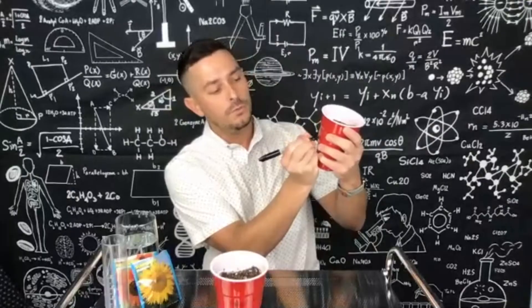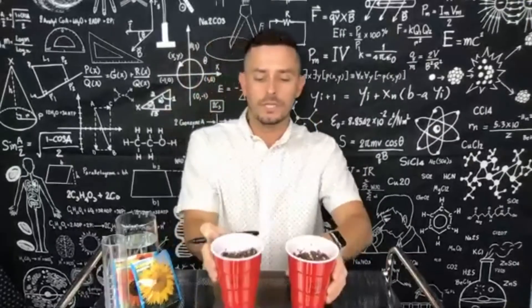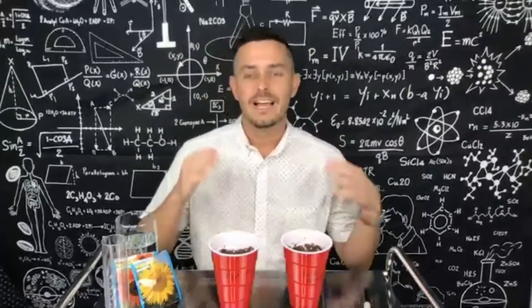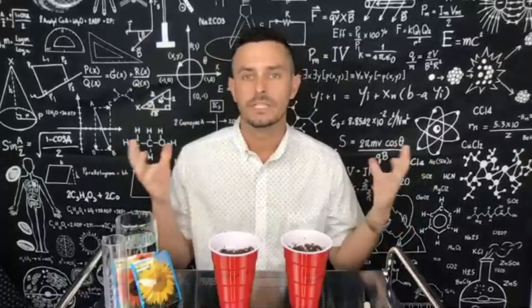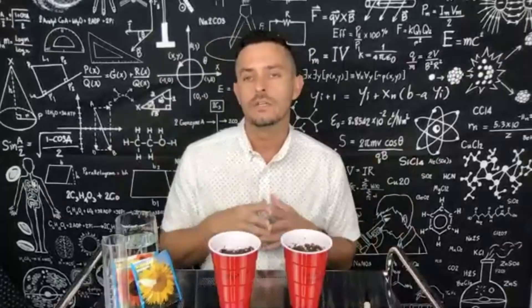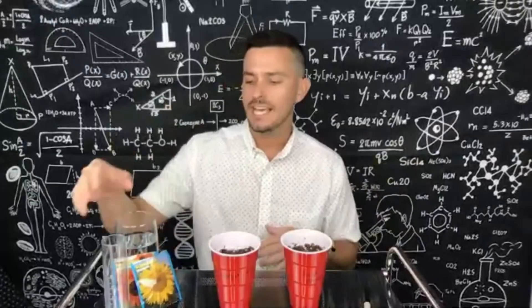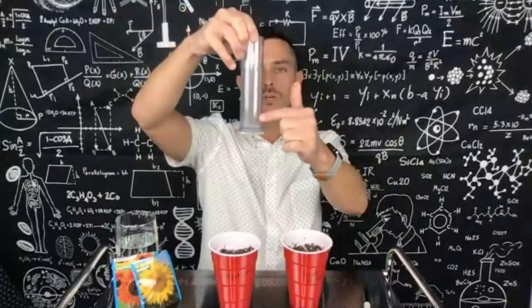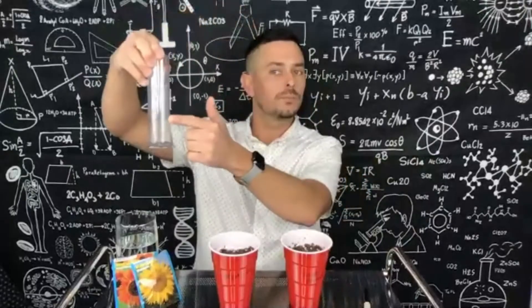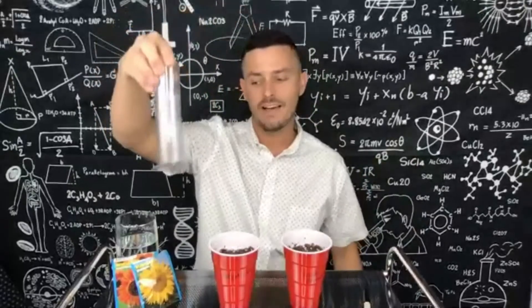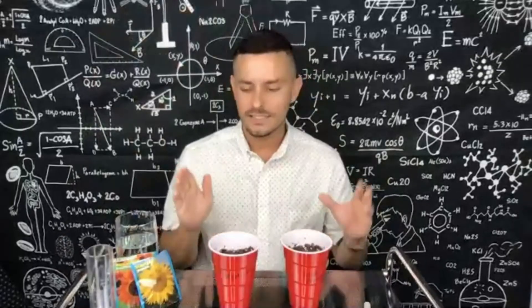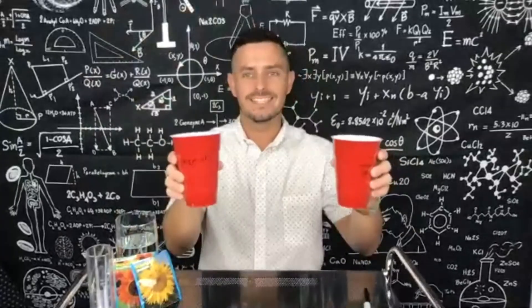If you wanted to test something different, some other variables we've tried before include amounts of sunlight — do we leave the plants in the windowsill all day or just half the day? We've also tested the amount of water, giving one plant 20 milliliters and another 40 milliliters to see which has the best impact. But today we're just going to test the soil.